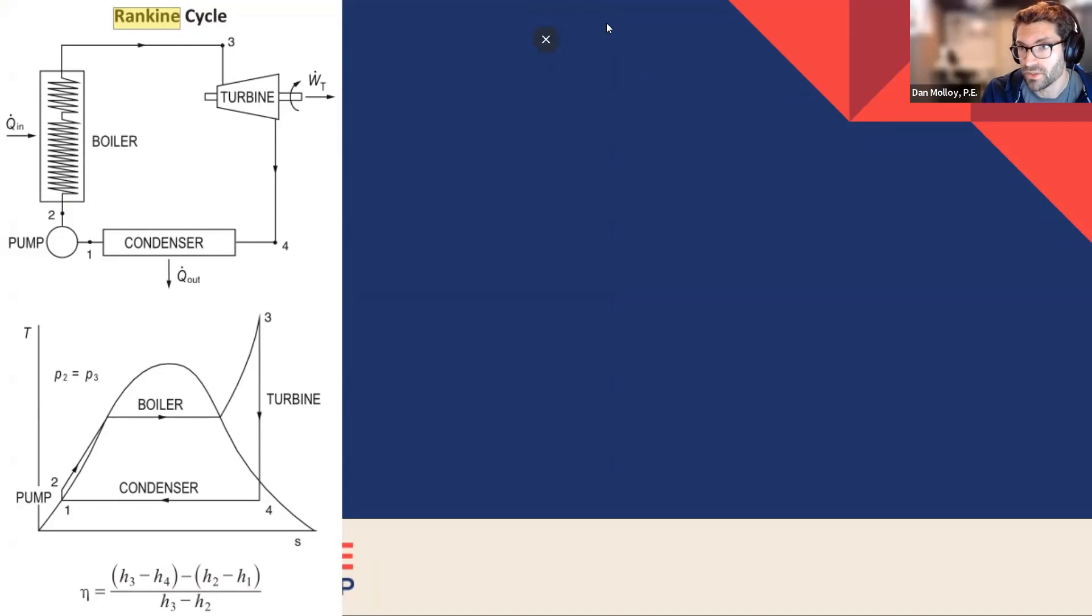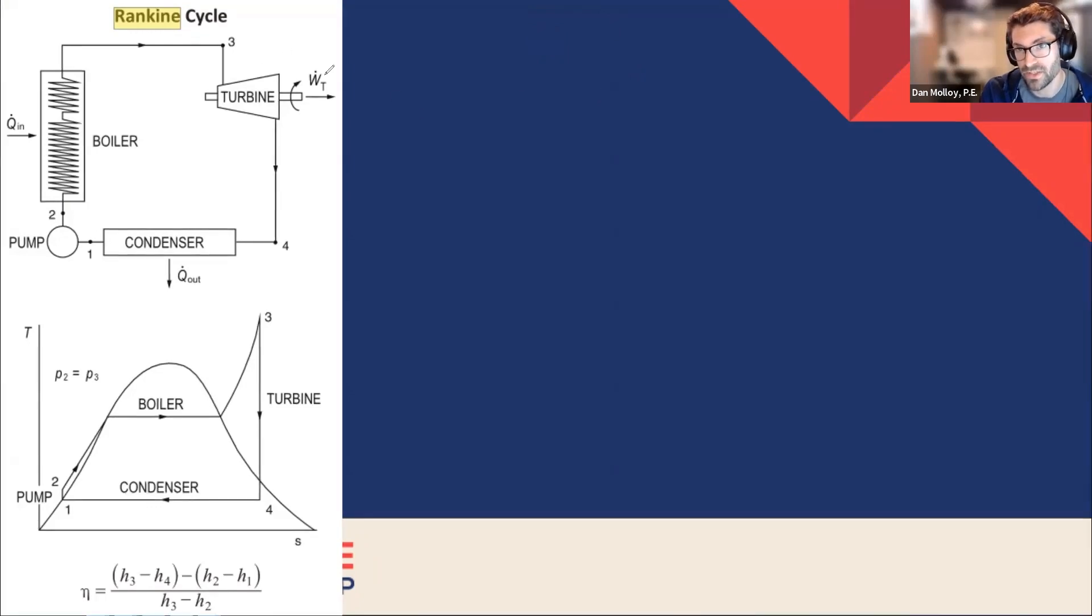So what do we know initially? Initially, we know the pressure and temperature at state three. So state three is fully defined. You know the pressure and the temperature. So from those two things, we can find the enthalpy and the entropy. Now, I don't want to leave you hanging because your question here was, I don't know how to use the tables. Well, if we know the pressure and the temperature, let's jump back to the previous slide.